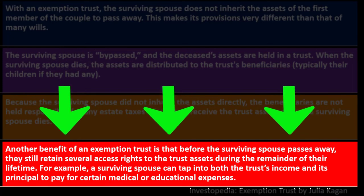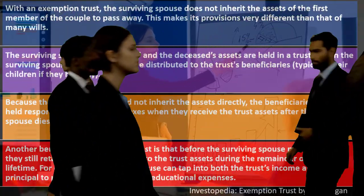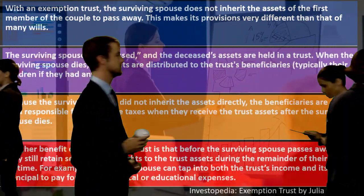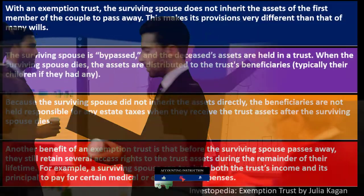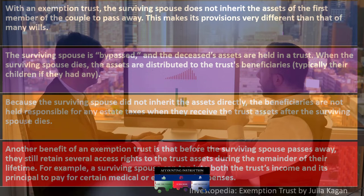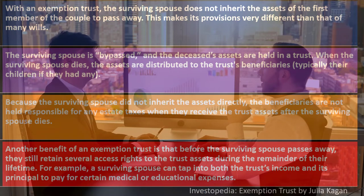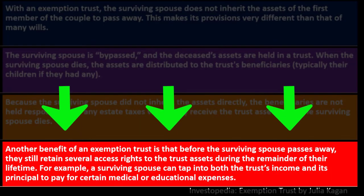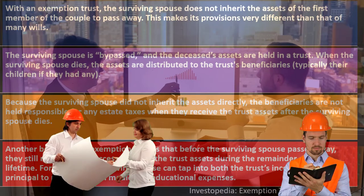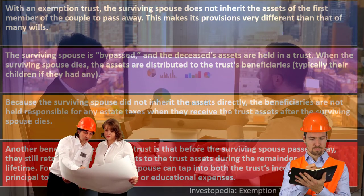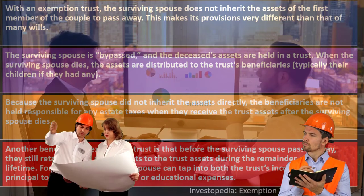Another benefit of an exemption trust is that before the surviving spouse passes away, they still retain several access rights to the trust assets during the remainder of their lifetime. This is the in-between line you're always trying to walk in estate planning. The trust is irrevocable — the idea being that the person can't just reverse what they did — but at the same time you're giving some leeway to the individual to have access to the money in the trust. You're trying to get the best of both worlds: the assets may not be included in the estate, but the trust is still doing what that individual wants.